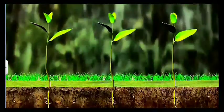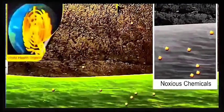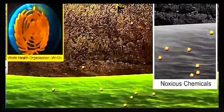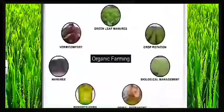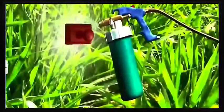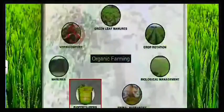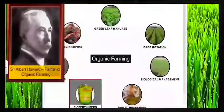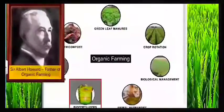Now let's come to the role of microbes as bio fertilizers. When we rely mainly on chemicals, in the long run these noxious chemicals pollute our water bodies and even our groundwater. Chemical fertilizers are very nutrient-specific; they help crop growth but are harmful in the long run. The alternative is organic farming. Sir Albert Howard, who is known as the father of organic farming, had suggested the use of microbes as bio fertilizers.